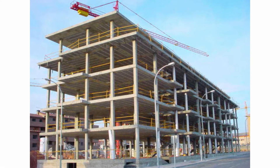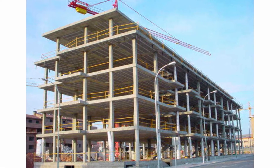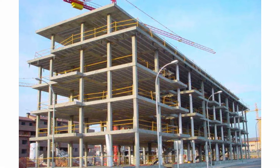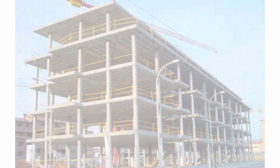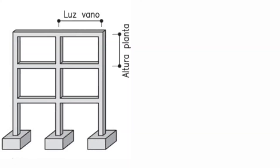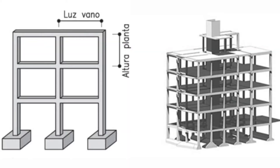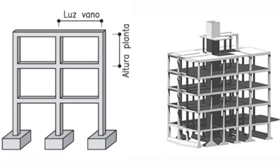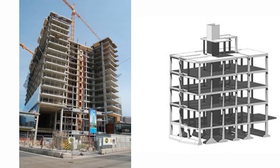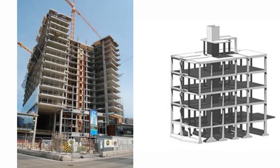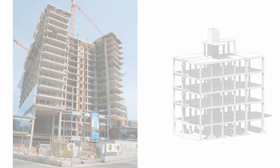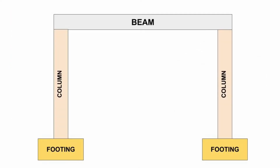Today, frame structures are the most utilized structures for the construction of houses. They are formed by several porticoes linked together. The structure of these buildings is formed by the union of many porticoes. A portico consists of two columns and a beam. If the column is in direct contact with the ground, a footing is placed at its base.